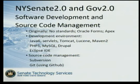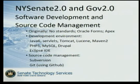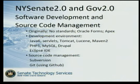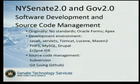Prior to the creation of the CIO's office, there were no standards in the Senate for software development — generally it meant Oracle Forms and Oracle Apex, with no repositories, no Subversion or CVS or Git. When we came into existence, we started using standards. We're now using Java, PHP, servlets, Tomcat, Lucene, and Maven — all open source. Most of our developers prefer Eclipse, but we welcome NetBeans, Sublime, and other editors.